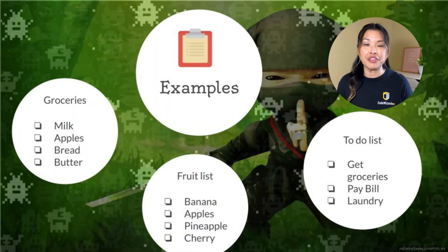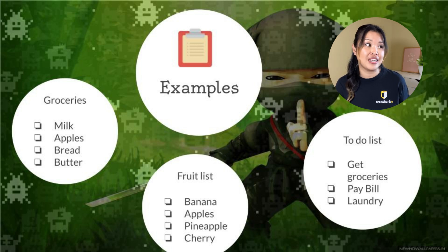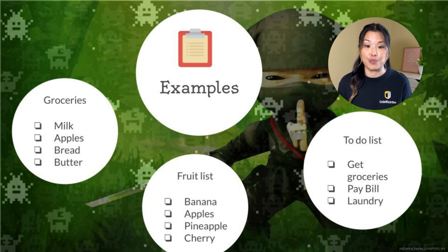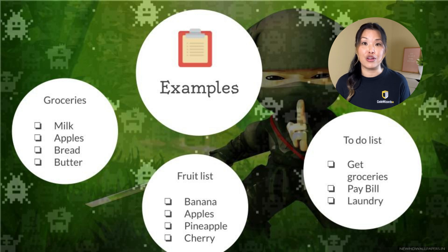In real life, similar things are often grouped together, right? So let's take, for example, the supermarket — we've got all the breads together, the cereals, the dairy. We've got different groups. So lists, like a to-do list or a grocery list, are also kind of a group of multiple things together.